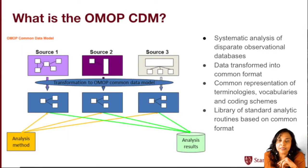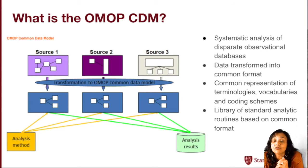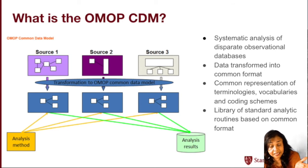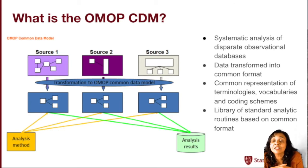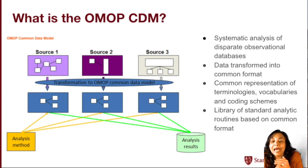So what is the OMOP CDM? The OMOP Common Data Model basically allows for the systematic analysis of disparate observational databases. The concept behind this approach is to transform the data contained in those databases into a common format — a common data model — as well as a common representation. The goal is for different datasets to have the same structure. Data harmonization refers to all efforts to combine data from different sources and provide users with a comparable view of data from different studies.